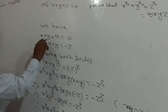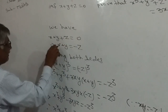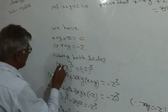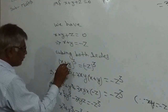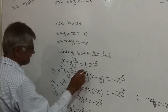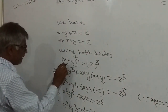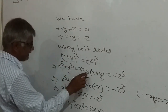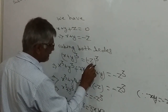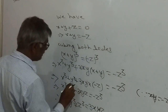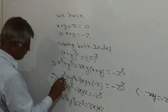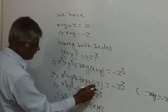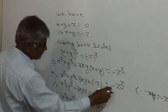We have x + y + z = 0. Moving z to the right side: x + y = −z. Cubing both sides: (x + y)³ = (−z)³. Now (x + y)³ = x³ + y³ + 3xy(x + y). And (−z)³ = −z³. Substituting x + y = −z: x³ + y³ + 3xy(−z) = −z³.